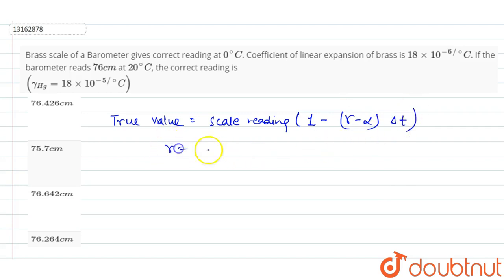Where gamma ki value hai 18 times 10 to the power minus 5 per degree Celsius, and alpha has been given to us as 18 times 10 to the power minus 6 per degree Celsius.